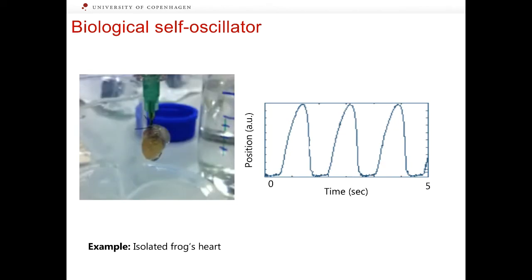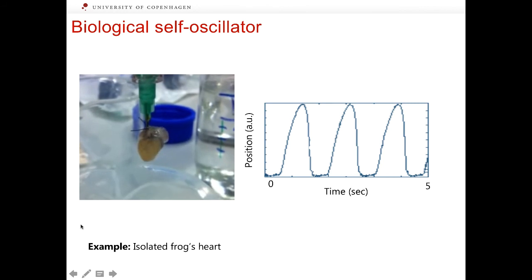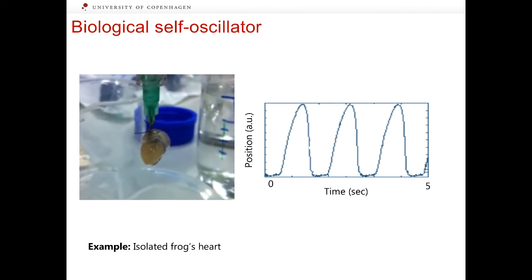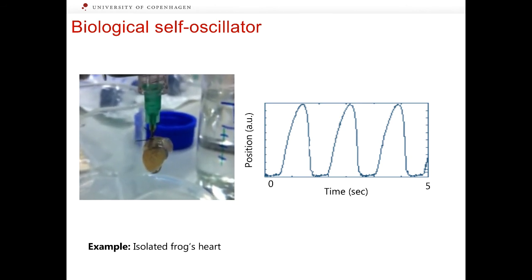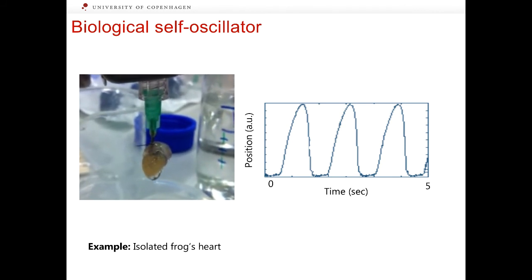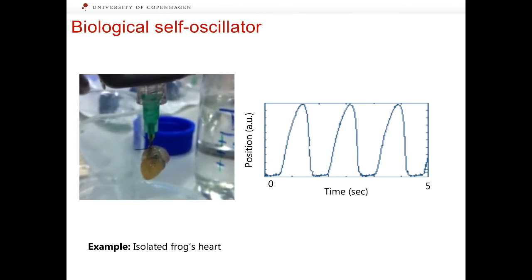This slide shows self-oscillations occurring in an organ. This organ is the heart of a frog, which was isolated from the frog. The trace to the right shows how the position of a point on a surface of the heart fluctuates as the heart beats spontaneously.